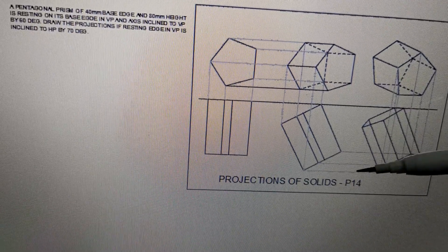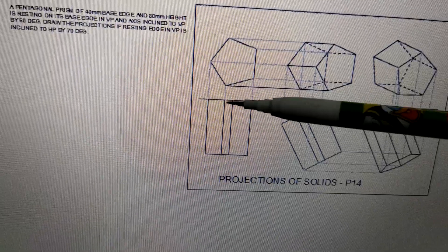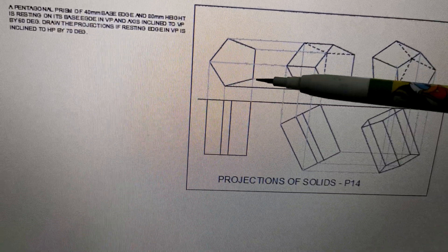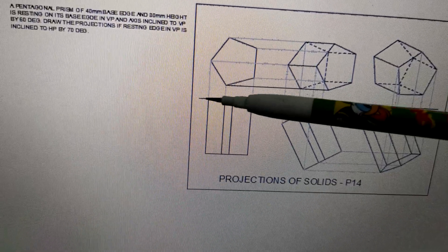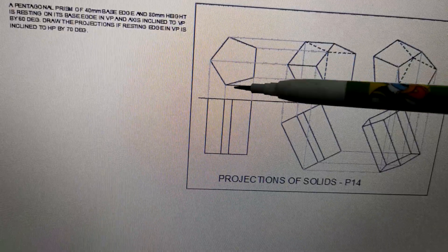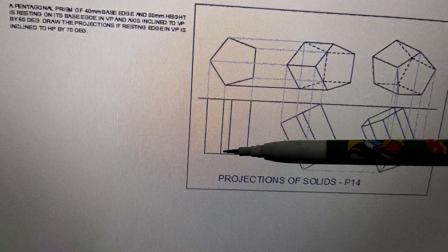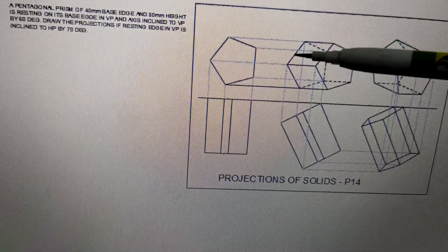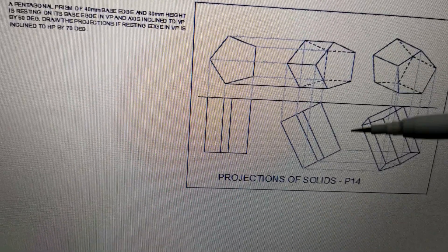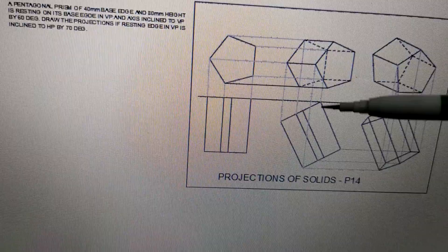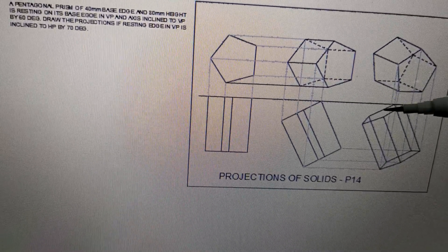Now we have to name the points. The resting edge is AB, so the base pentagon points are named A, B, C, D, E and the top pentagonal surface points are named 1, 2, 3, 4, 5. In each repeated view, A, B, C, D, E are on the base plane and 1, 2, 3, 4, 5 are on the top plane. The solid is resting on edge AB. These point names are extremely important because they help us prepare the figures.